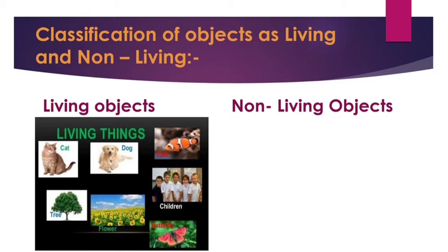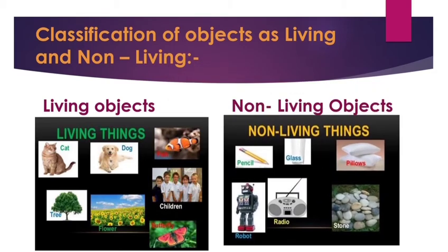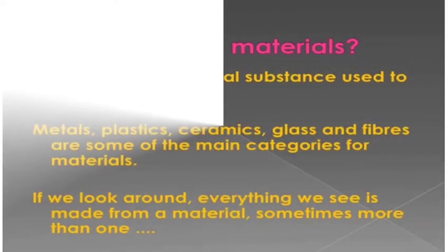The characteristic properties of living objects are: they need food, they respire, they move, and they reproduce. The characteristic properties of non-living things — like a pencil, a glass, a robot, a radio, a stone, or a pillow — are that they cannot move, they don't need food, they do not respire, and they do not reproduce. So living things' characteristics are differentiated from those of non-living things.